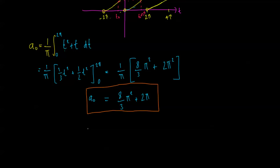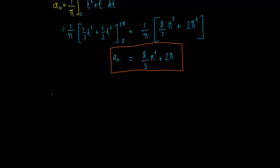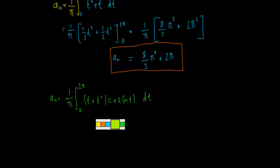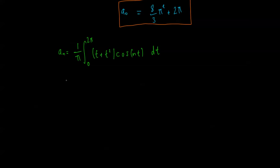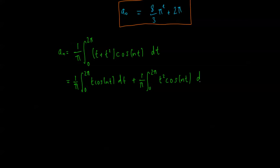The next thing is to find Aₙ. Aₙ is equal to 1 on L, integrated from 0 to 2π of the function t plus t squared times cos nt dt. We split this as 1 on π times the integral from 0 to 2π of t cos nt dt, plus 1 on π times the integral from 0 to 2π of t squared cos nt dt. We'll use the formula sheet to help evaluate these.